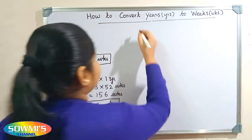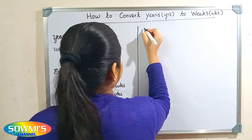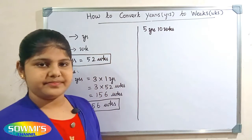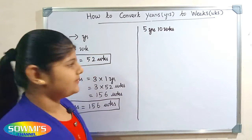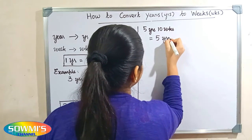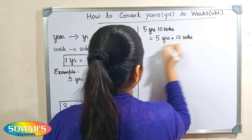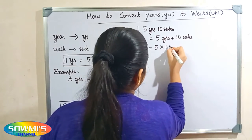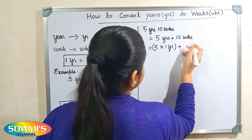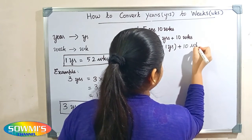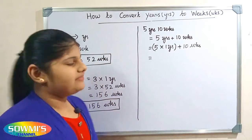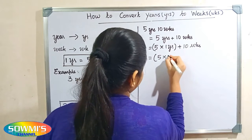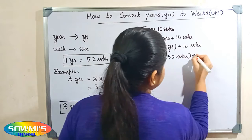Next we will take one more example. We can take five years ten weeks. So five years ten weeks will be five years plus ten weeks. Five years can be written as five multiply one year, plus ten weeks. Now we will apply the formula and substitute 52 weeks in place of one year, so five multiply 52 weeks, plus ten weeks.